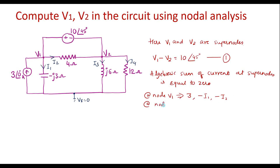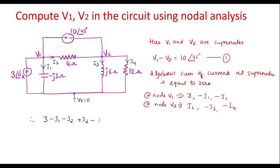Similarly, at node V2, current I2 is incoming, that is plus I2, and I3 is leaving, written as minus I3, and I4 is also leaving, that is minus I4. The algebraic sum of currents at the super node equals 0. Therefore: 3 minus I1 minus I2 plus I2 minus I3 minus I4 equals 0. Simplifying, I2 and I2 cancel, giving 3 equals I1 plus I3 plus I4.